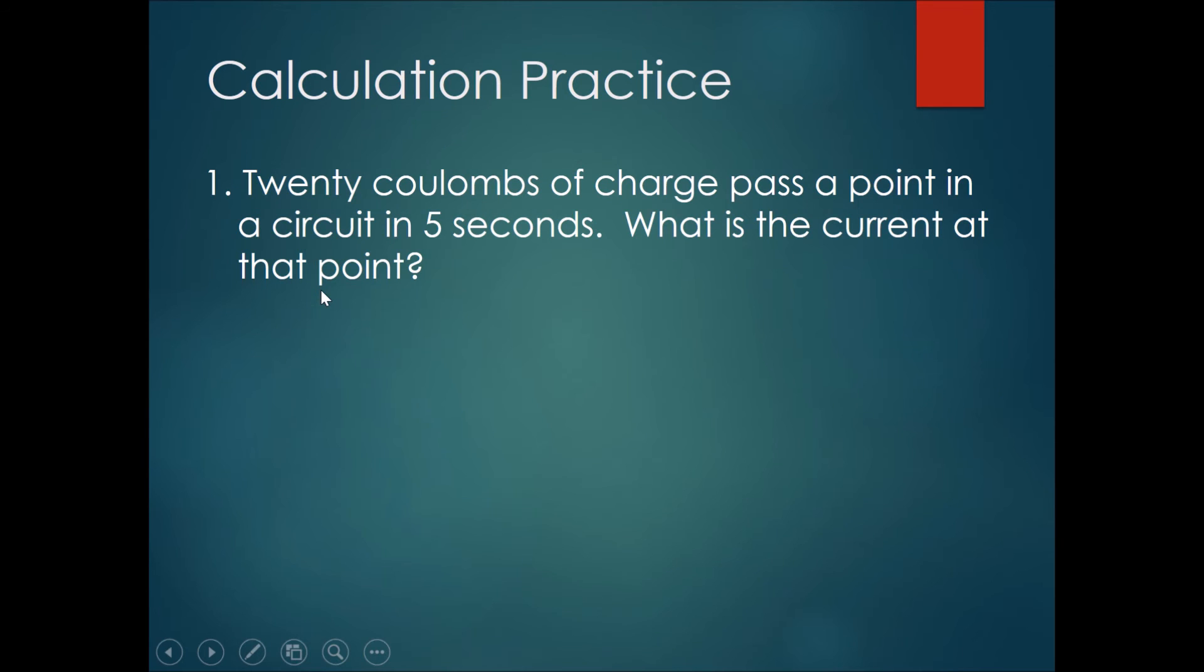Now let's do some calculation practice using the formula that we just learned. Twenty coulombs of charge pass a point in a circuit in five seconds. What is the current at that point? Please pause the video here and solve this question.